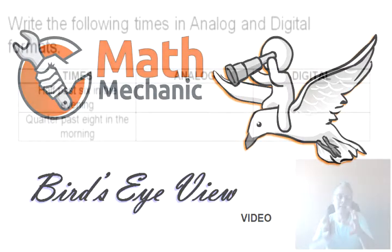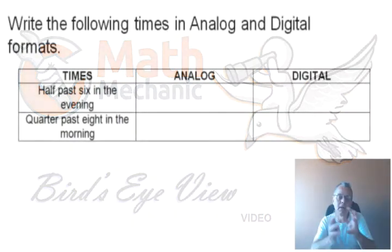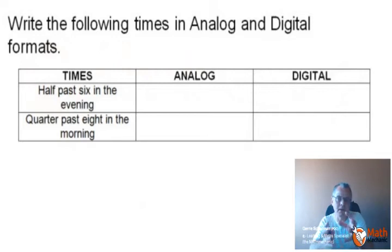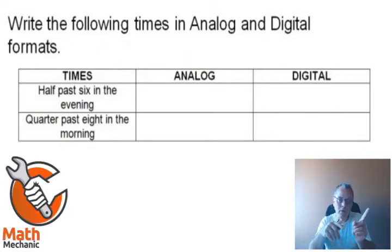It's very important that you understand the difference between analog time and digital time. Analog time is where you've got the arms of the watch going around. You've got your hour arm, your minute arm, and sometimes even a second arm that will run around in circles on a traditional clock face.